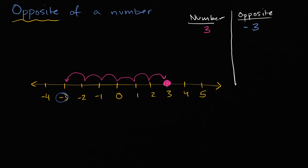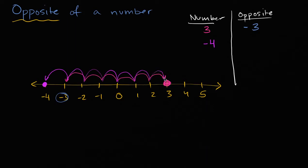Now what if your number is negative? What if your number is, let's say, negative four? What's the opposite of that? I encourage you to pause the video and try to think about it on your own. Well, negative four is right over here — it is four to the left of zero: one, two, three, four to the left of zero. So its opposite is going to be four to the right of zero: one, two, three, four. It's going to be positive four.